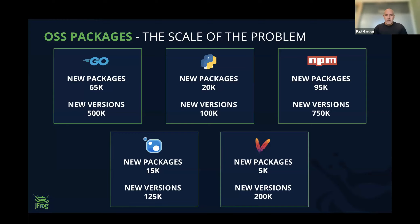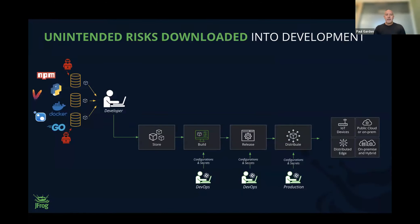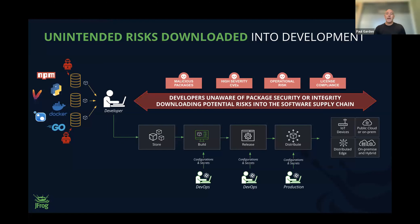The idea of JFrog Curation is to take this headache away from developers and have them focusing on what they care about, which is just writing code. Today the problem is the developer is busy pulling packages from different repositories — whether it's Maven, Python, Go, or NuGet — and they're completely unaware they're bringing in packages that may have security or integrity problems. They're bringing potential risks into the software supply chain in a multitude of different kinds of ways.